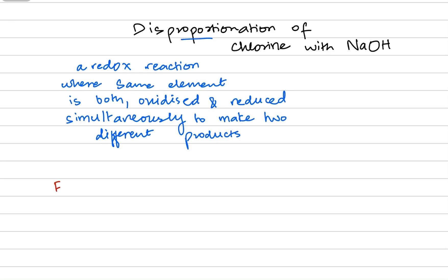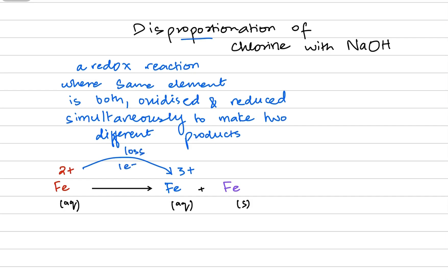For example, if you start with iron with a charge of plus two, and you receive two products — Fe3+ and pure iron — you started with aqueous Fe2+ ions and ended with aqueous Fe3+ ions and solid iron. From Fe2+ to Fe3+ you are losing one electron, which is oxidation. At the same time, Fe2+ becoming Fe0 gains two electrons, which is reduction. That is a quick example of a disproportionation reaction.